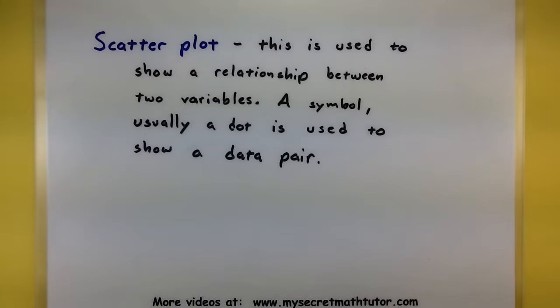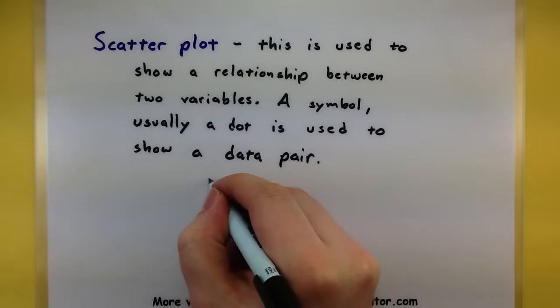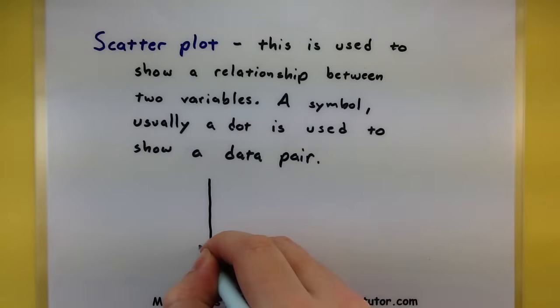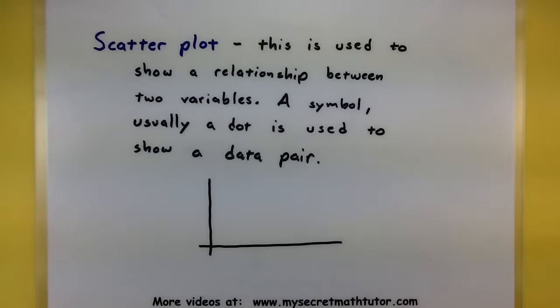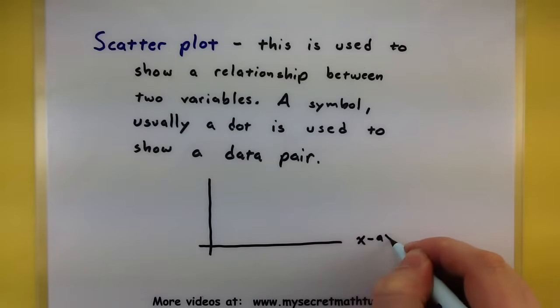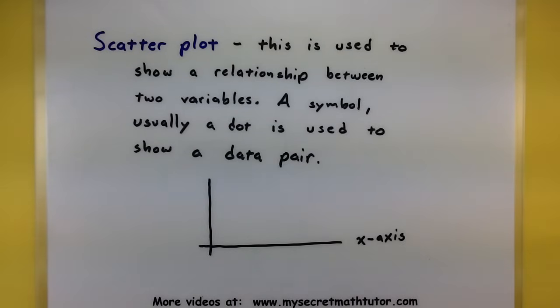Let's look at some other terms that are also used when describing these scatter plots. We'll take the data and take both of our variables and represent them along both of these axes here. On the bottom one we call this our x-axis. This is where we'll display our independent variable.